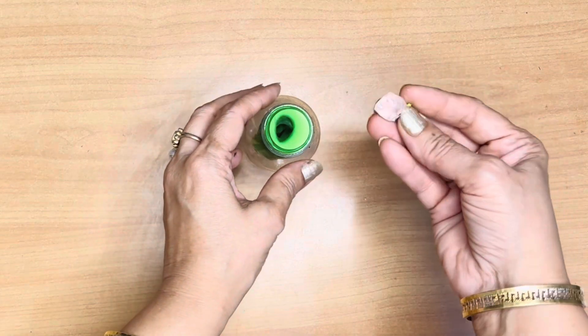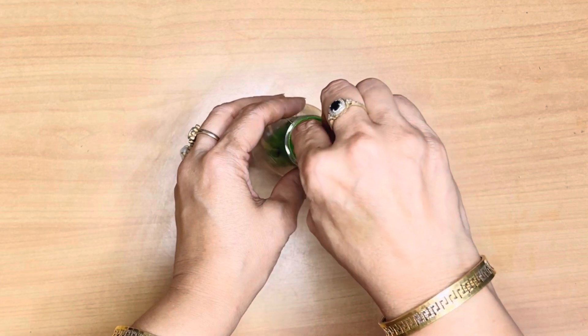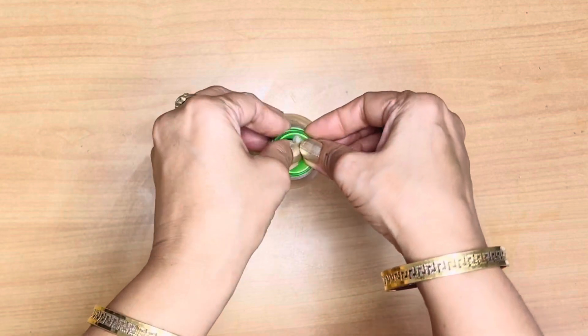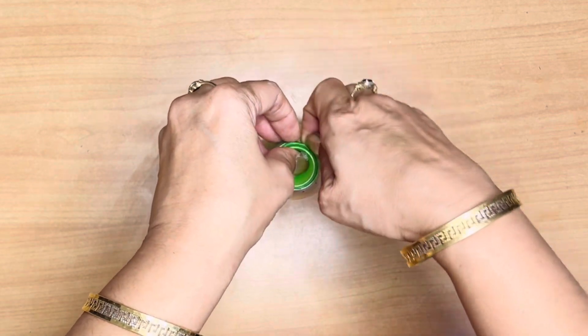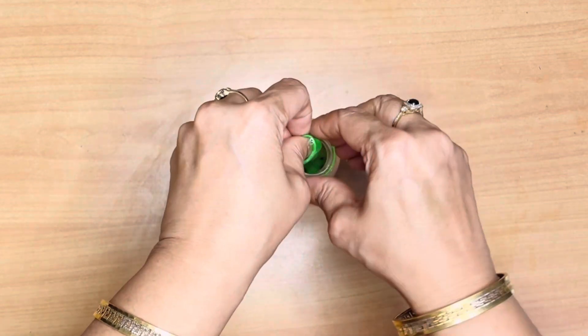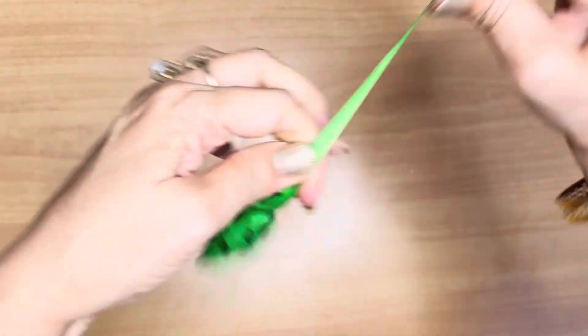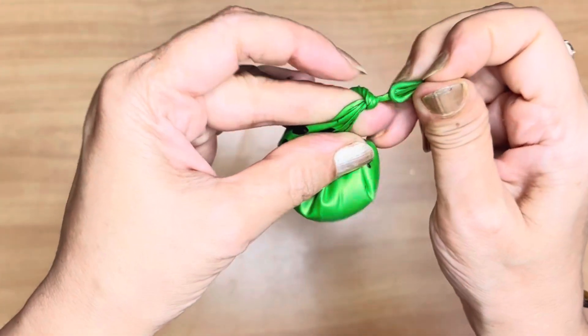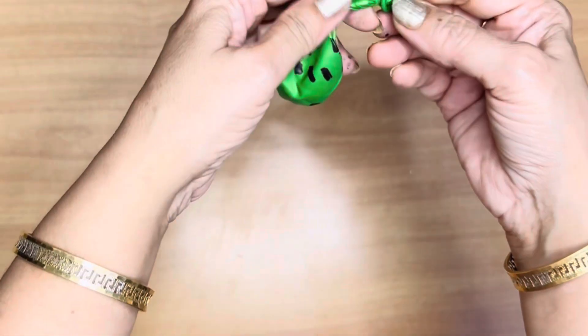Carefully place the vinegar pouch inside the balloon. Don't break it yet. Now, tie the balloon tightly. Ready for the magic?